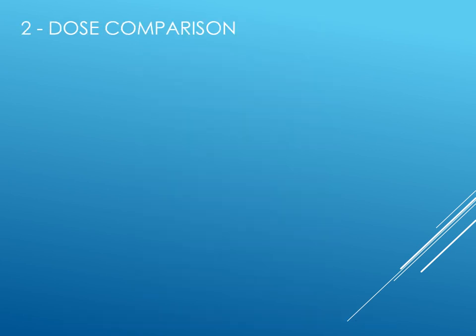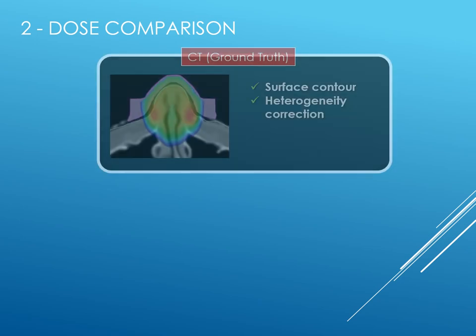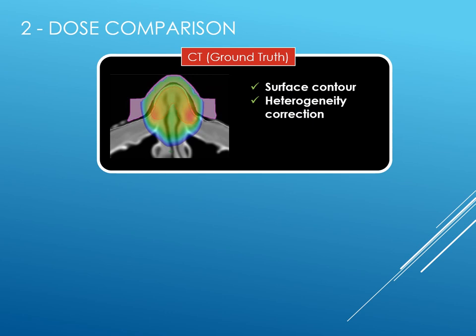To evaluate any improvement on dose calculation, six clinical cases were investigated and compared using three approaches to calculation. First, our ground truth: a full CT scan which contains both surface contour and heterogeneity information.